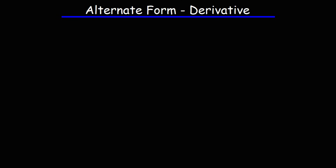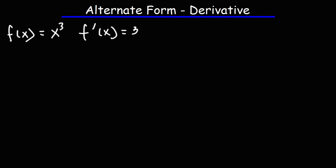Let's talk about the alternative form of the derivative. Let's say we have some function f of x, and let's define it to be equal to x cubed. We know what the first derivative of that function is. Using the power rule, the derivative of x cubed is going to be 3x squared.